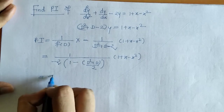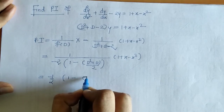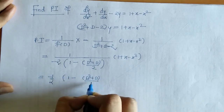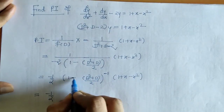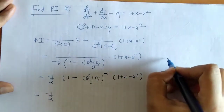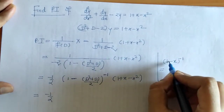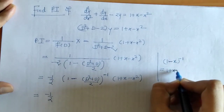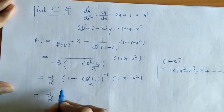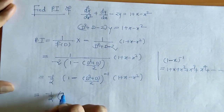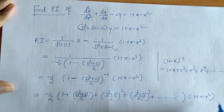We take 1 plus φ(D) into the numerator so it is now with a negative index. Then we use the binomial expansion. Since we have 1 minus x raised to minus 1 with a minus sign, all terms in the expansion will have a plus sign.